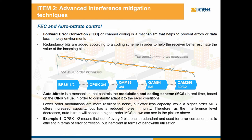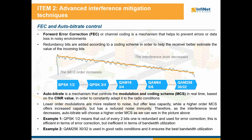QPSK 1/2 means that out of every two bits, one is used for error correction. This is very good in terms of error correction, but it is ineffective in terms of band utilization — half of the time we just send redundancy bits instead of useful data. On the other hand, QAM 256 30/32 can be used if the radio conditions are good. In this case, there are only two redundancy bits out of every 32 bits, and it is enough to correct the errors while also ensuring an efficient bandwidth utilization.